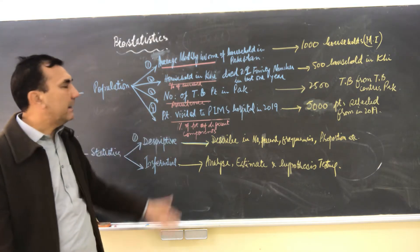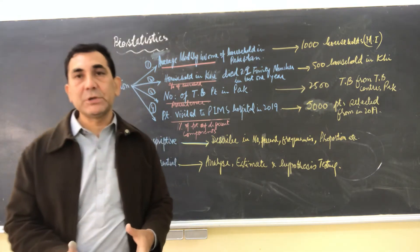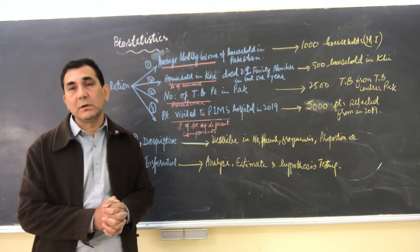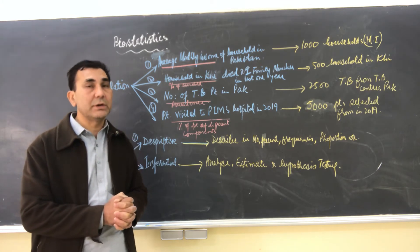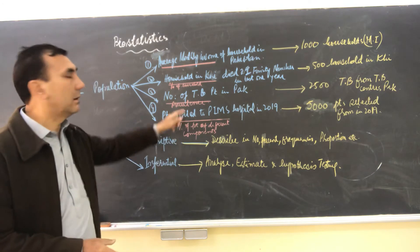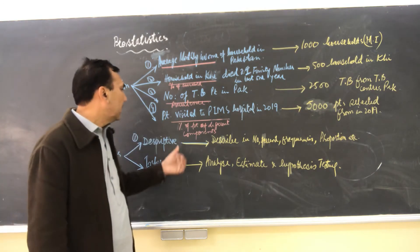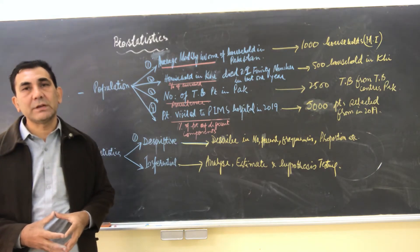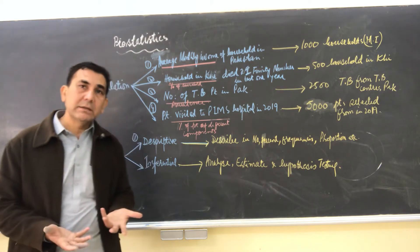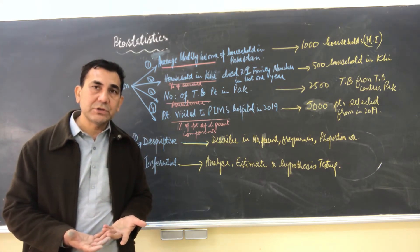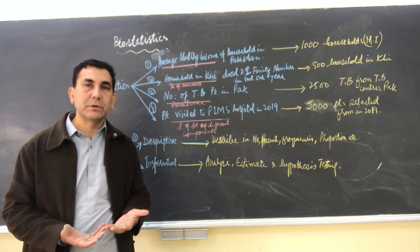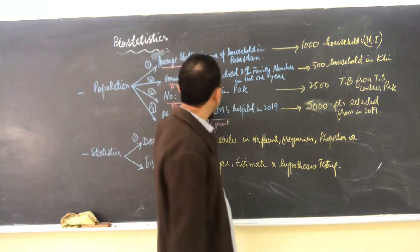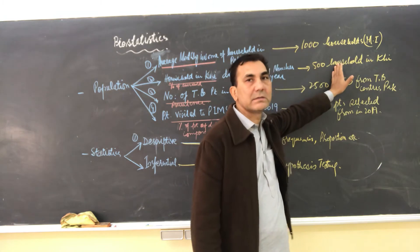If anyone wants to see the prevalence of TB patients in Pakistan, it is again a measurement of a characteristic of the entire population of TB patients in Pakistan, so it is a parameter. Likewise, the percentage of patients who visited PIMS hospital in 2019 is again a measurement of a characteristic of that population, so it is a parameter. If the same measurement is done on a selected sample size, it is called a statistic.